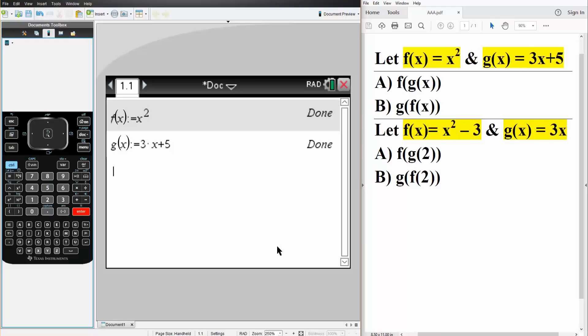And so for part a, we want to find f g of x. So that's simple. F parentheses g parentheses x. Like this, identical to what we have here. Hit enter, and this is the answer.